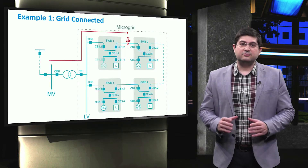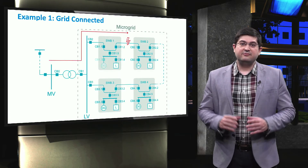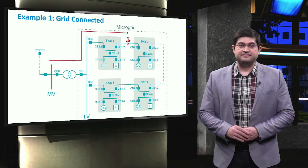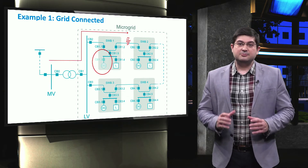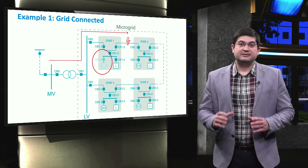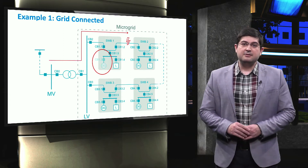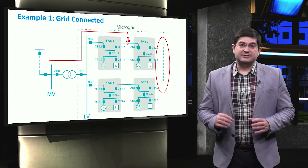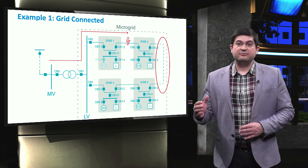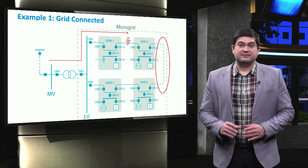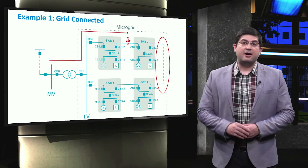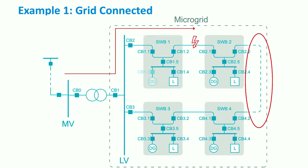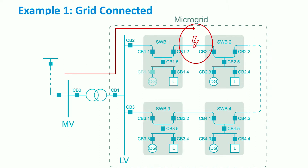Let's have a look into one example of a microgrid which is connected to the external grid. In this example, we assume that the distributed generator is not present in switchboard 1. Moreover, the end of the feeders above and below are not connected — in other words, switchboard 2 and switchboard 4 are not connected.